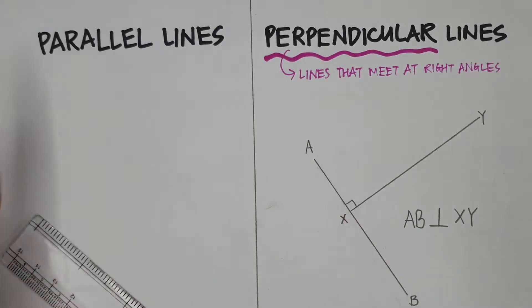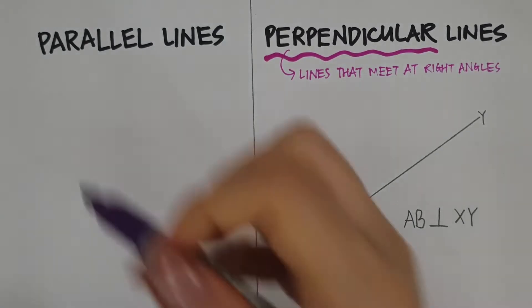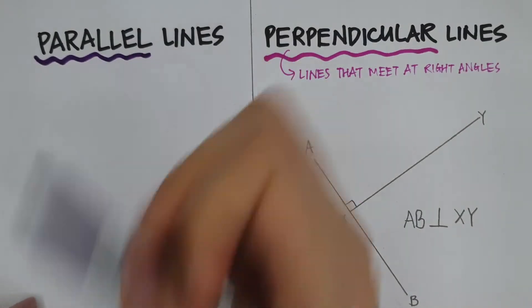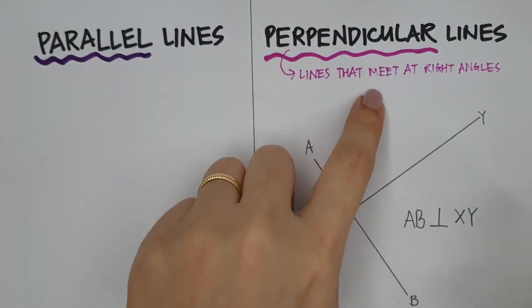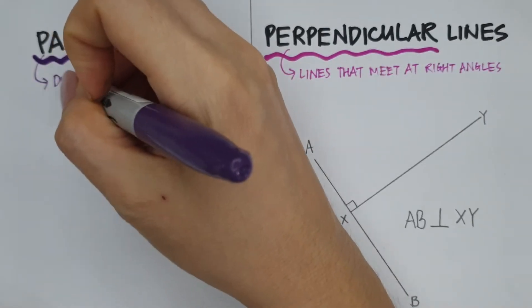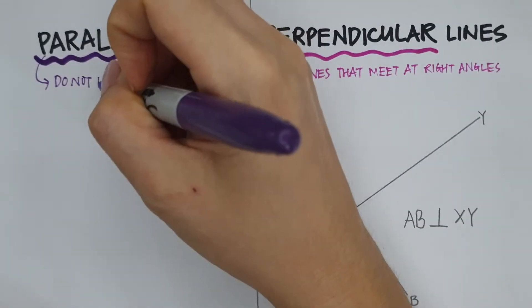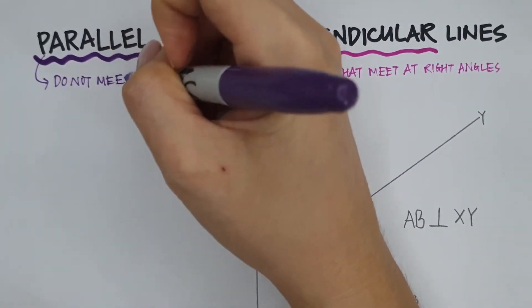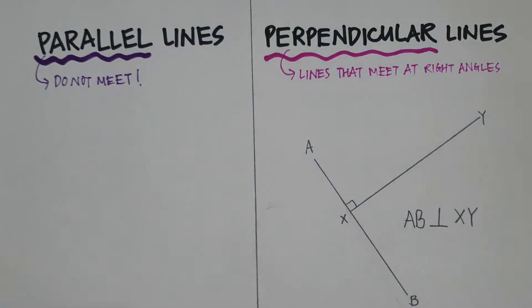So now let's move on to parallel lines. What are parallel lines? Perpendicular lines meet at right angles but parallel lines do not meet at all. There are lines that do not meet and they should never ever meet. They're kind of like enemies.